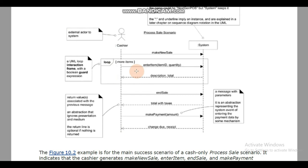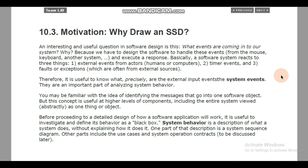There are some comments related to the objects used in our sequence diagram. The cashier is an external actor, and the system is also noted. We are using the UML loop interaction frame — if the number of items is repeated, we use a loop. The message and response remain within the same frame. The return line is optional if there is no return value. Messages can be called with parameters passed along.